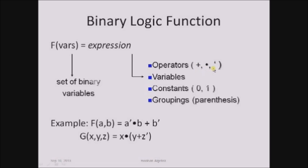The expression may also involve variables, constants like 0 and 1, and parentheses. For example, f equals a complement dot b plus b complement, where within the parentheses are the binary input variables, and on the right hand side, a complement, b and b complement are the binary variables, while dot and plus are the operators.